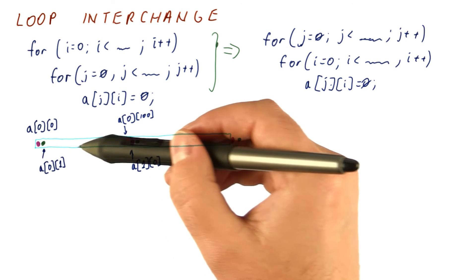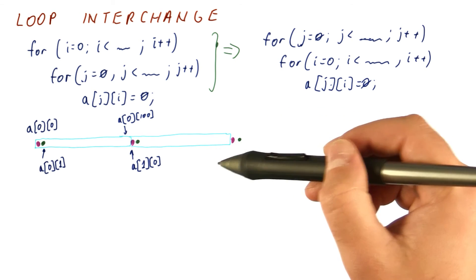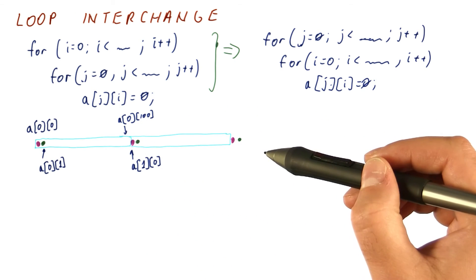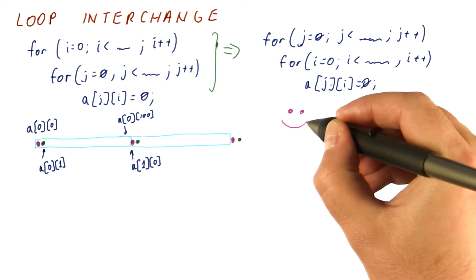Not only does it improve locality, because now we end up accessing the entire cache block at a time, but also it makes the access nicely sequential, so one of the prefetchers can do a good job on it. So this works really well.